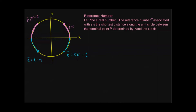You don't need to memorize these formulas, but make sure you understand where they came from, so that given a t in any quadrant you can figure out your t-bar. In the next video, we're going to talk about how to use these reference numbers to find terminal points in all quadrants, based on the chart of common terminal points we had before.